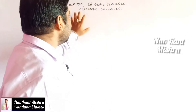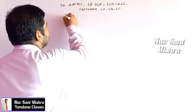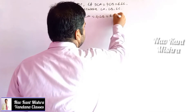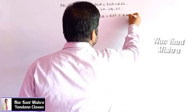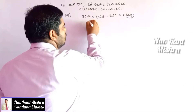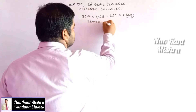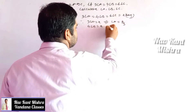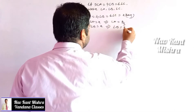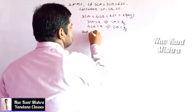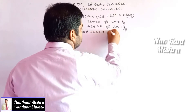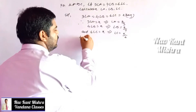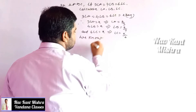In this question, you need to write down: 3 angle A = 4 angle B = 6 angle C. Consider this as x. Therefore, angle A = x/3, angle B = x/4, and angle C = x/6.